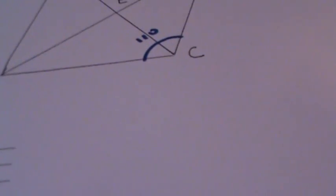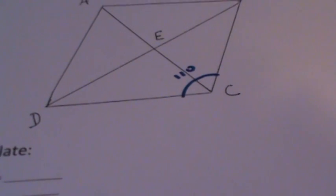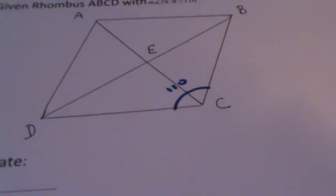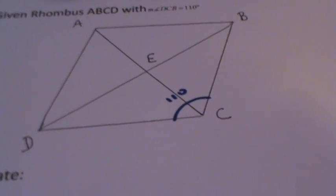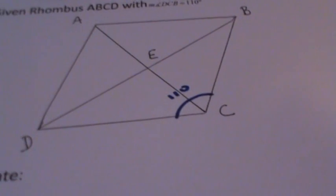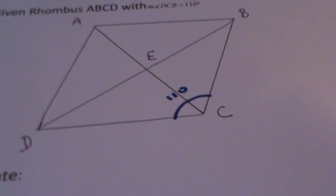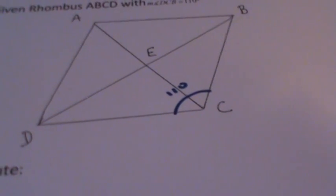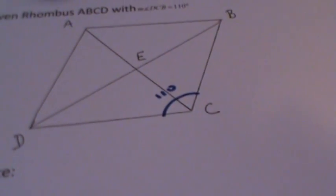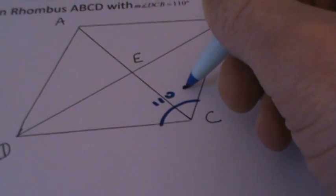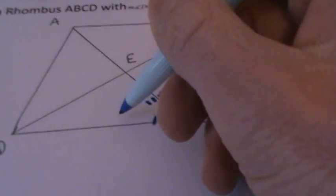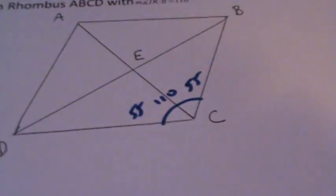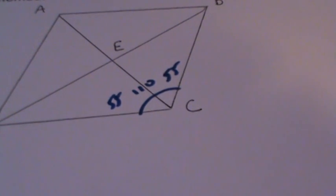The next thing to be aware of is that the diagonals bisect the opposite angles they go through — bisect means cut in half. So we take 110 divided by two and we get a measure of 55 degrees on each side of that diagonal.